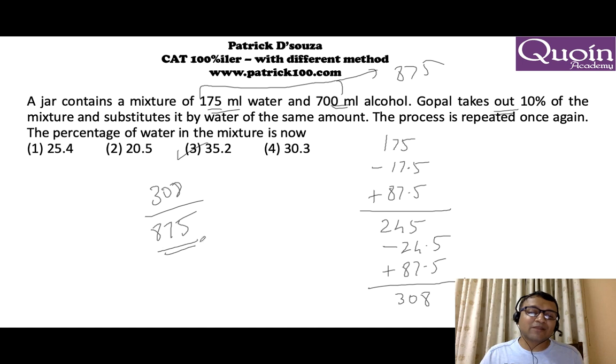If you calculate approximately you can get the answer 35.2. You can make out 875, 10% will be 87.5, 30% will be around 240-250. So 308 is much more than 30%, so the answer will be 35.2. You can do approximate calculations wherever the options are far.